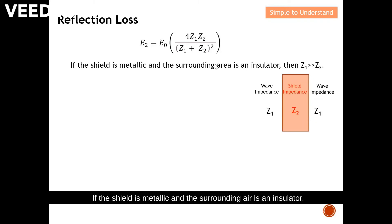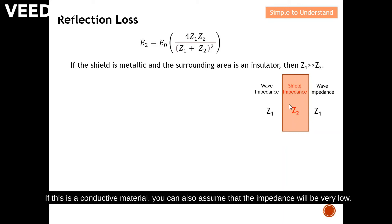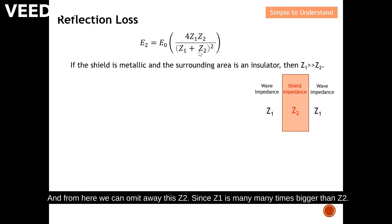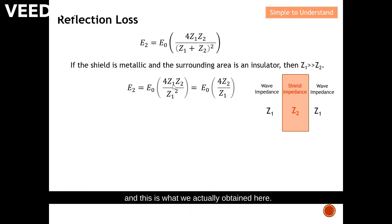If the shield is a conductor and the surrounding air is an insulator, since the air is an insulator we can conclude that its impedance Z1 is much much greater than the shield impedance Z2. A conductive shield material has very low impedance — typically at most one or two ohms — which is very small compared to the wave impedance. So Z1 is many many times bigger than Z2, and we can omit Z2, obtaining a simplified result.